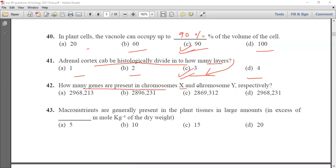How many genes are present in chromosome X and Y respectively? Options include various combinations. 2968 on X chromosome and 231 on Y chromosome. Macronutrients generally present in plant tissues in large amount in excess of dash millimole per kg of dry weight. 5, 10, 15 or 20. It is 10 millimole per kg.